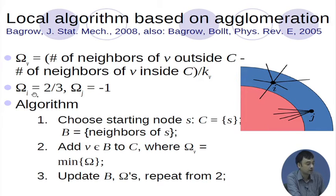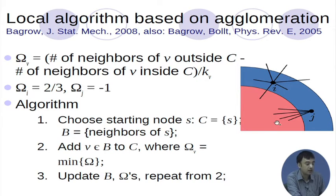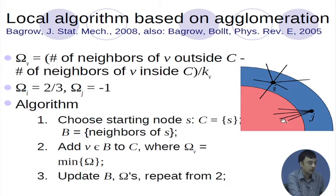Similarly, you can compute the outwardness score for node j. For node j, all edges are going inside the community, so intuitively node j is a much better candidate to be inserted in the community than node i. Here the degree equals 4 and the total number of edges going inside the community is also 4, with no edge going outside. So the outwardness is 0 minus 4 divided by 4, which equals minus 1.